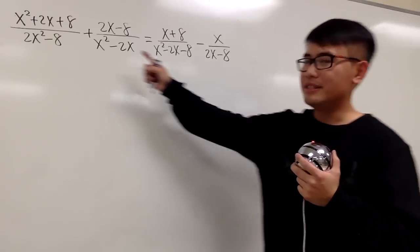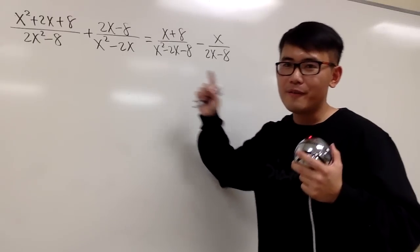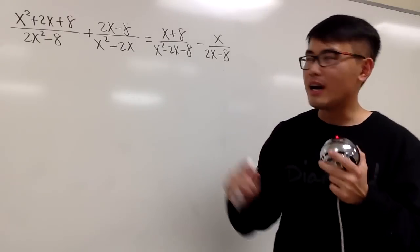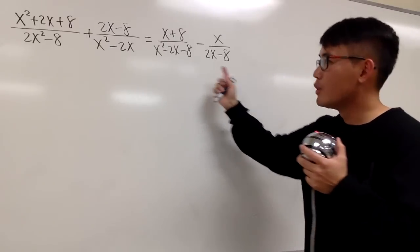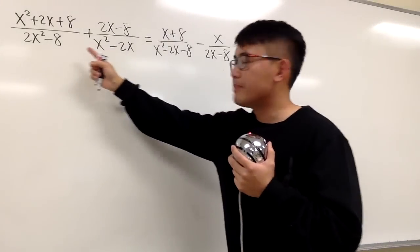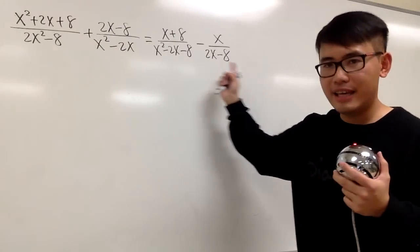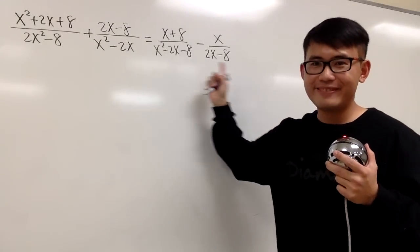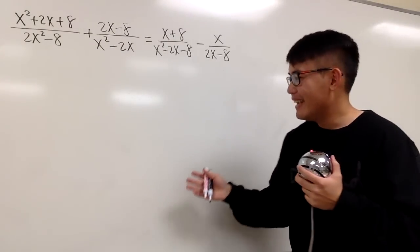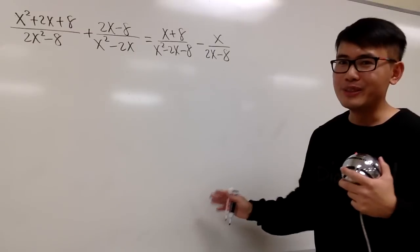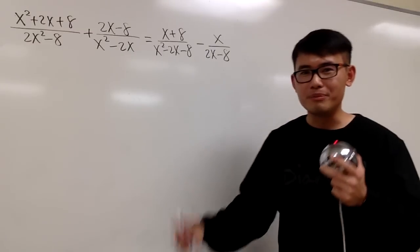So let's look at this equation. First, I want to point out how amazing this is. We see nothing but 2 and 8. That's amazing. And at the end, you will see what's even more amazing.